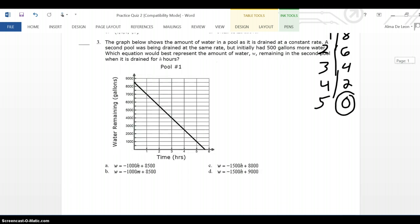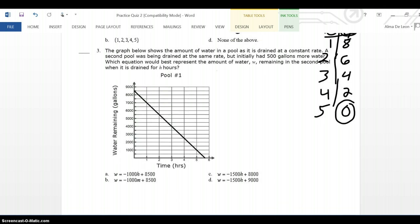Number 3. The graph below shows the amount of water in a pool as it is drained at a constant rate. A second pool was being drained at the same rate, but initially had 500 gallons more water. Which equation would best describe the amount of water W remaining in the second pool when it is drained for 8 hours? Okay, so basically here is a graph, and I'm trying to figure out what is the equation that matches that graph. Well, first of all, I know that the y-intercept is at 8,500.